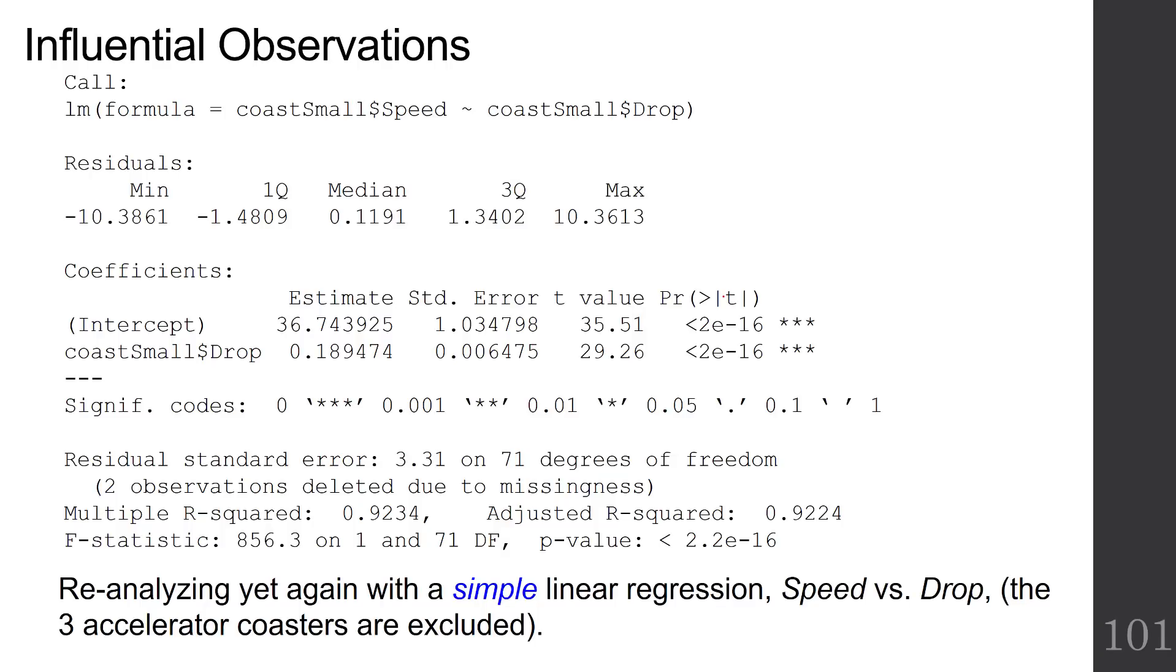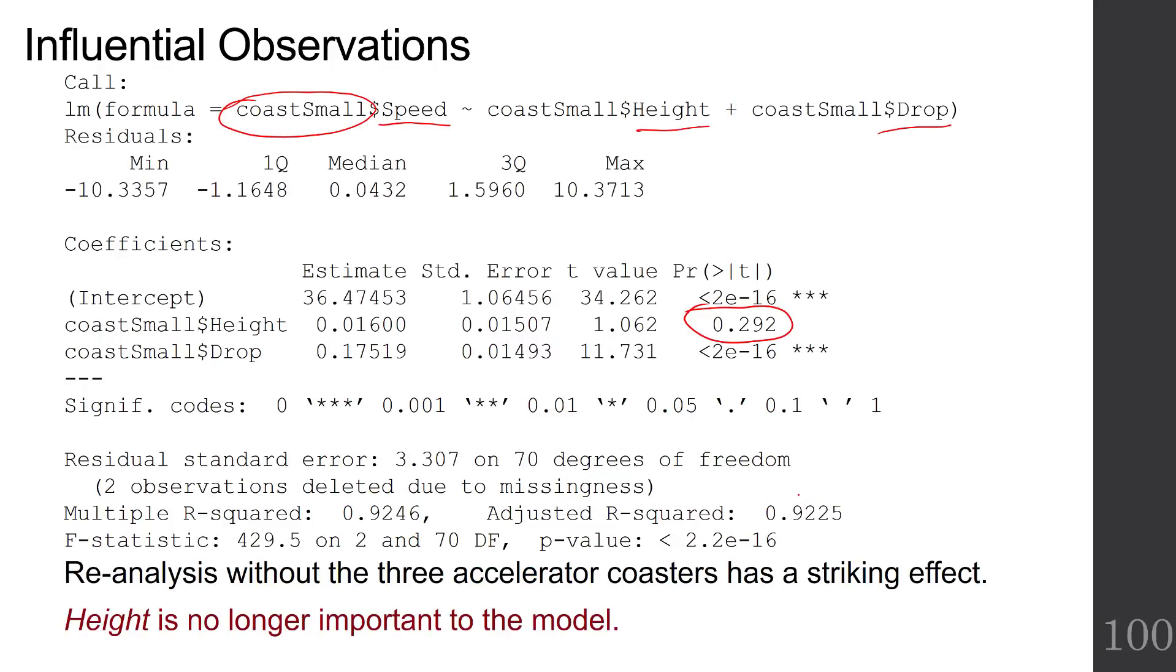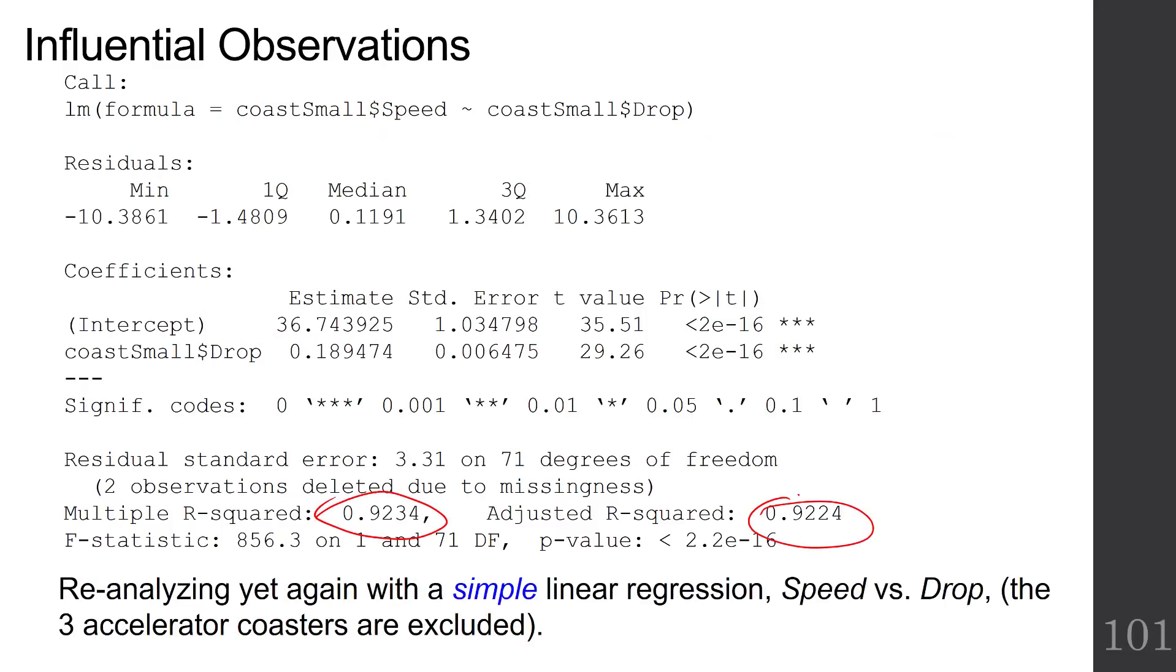So now we can reanalyze yet again with a simple linear regression with only drop because height was not significant. Take a look - the R squared is 92%, the same as it was with both the predictors. It's doing just as well with a simple linear regression.